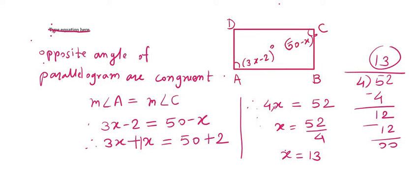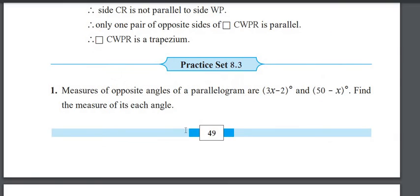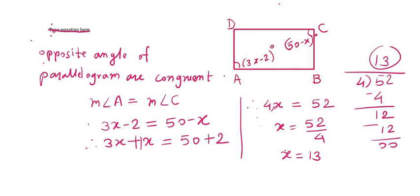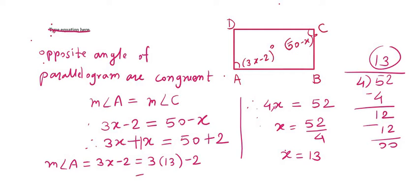But we are asked to find the measure of each angle, not just X. Let us find the measure of angle A. Angle A is 3X minus 2, that means 3 times 13 minus 2, which is 39 minus 2, that is 37 degrees. So angle A measures 37 degrees.